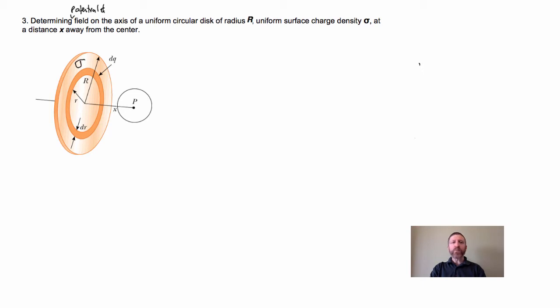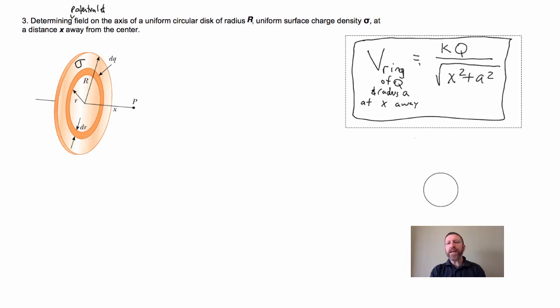So the first thing we've got to do is rely on what we found last time. We found that the V due to a ring of charge Q and radius A at that similar distance x away is this. So we're going to use that fact, accepting that instead of our ring, we're going to have to make an infinite number of rings, and instead of charge Q...